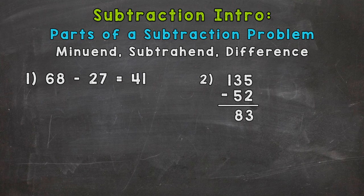Let's jump right into number one, where we have 68 minus 27 equals 41. This 68, the number being subtracted from, is our minuend.